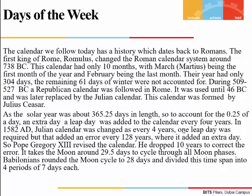On 15th October 1582, Pope Gregory the 13th revised the calendar and dropped 10 days to correct the accumulated error. As the moon takes 29.5 days to cycle through all its phases, the Babylonians rounded the moon cycle to 28 days and divided this time span into four periods — that is why we have seven days in a week.